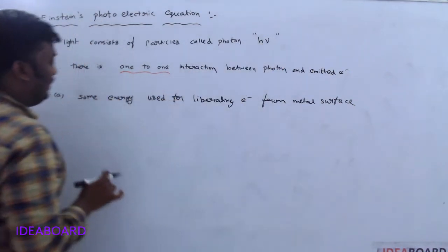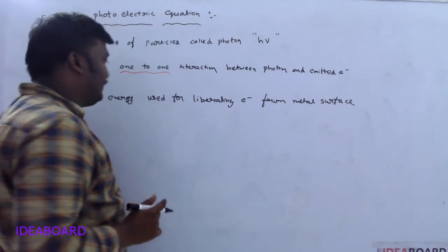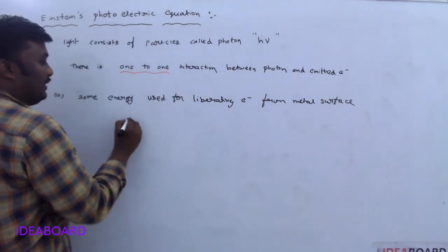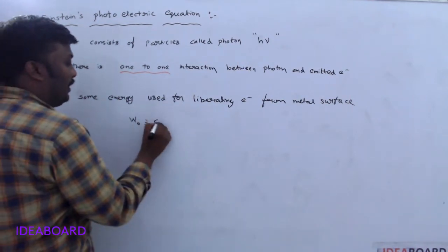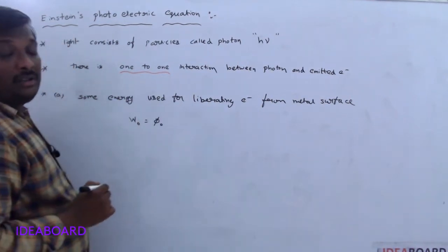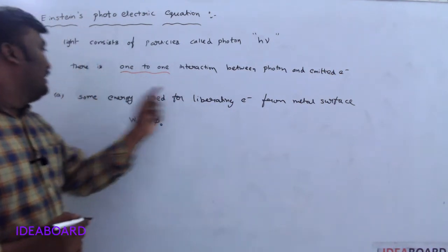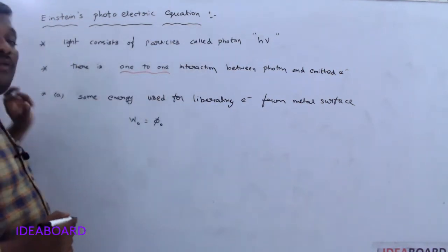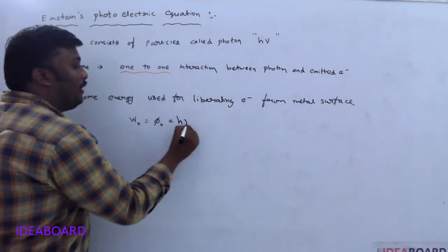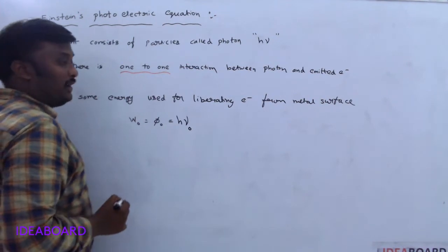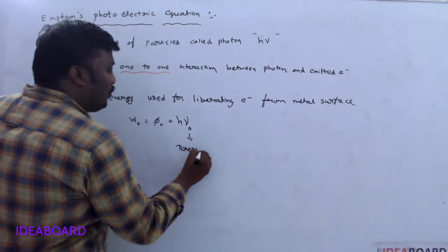Out of the photon energy h·ν, some energy is used for liberating the electron from the metal surface. We studied previously it is denoted as work function w₀. The work function is the minimum energy required to liberate the electron from the metal surface. A certain amount of energy is used as work function w₀, and we know the formula for work function is h·ν₀, where ν₀ is named as threshold frequency.